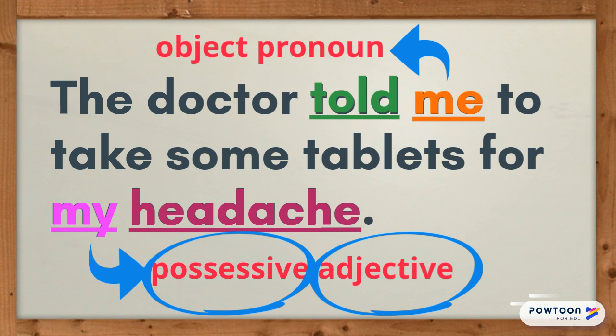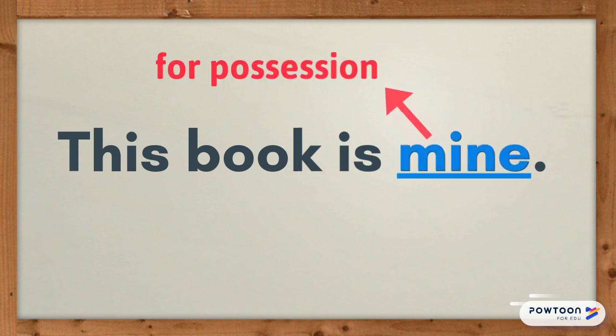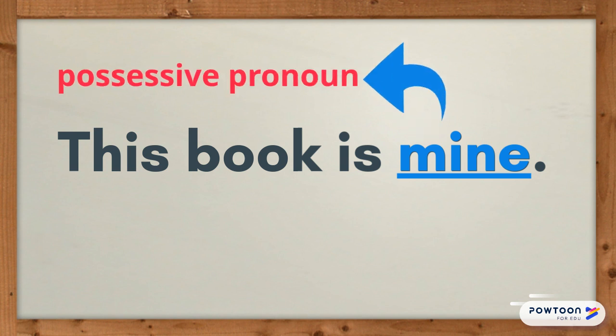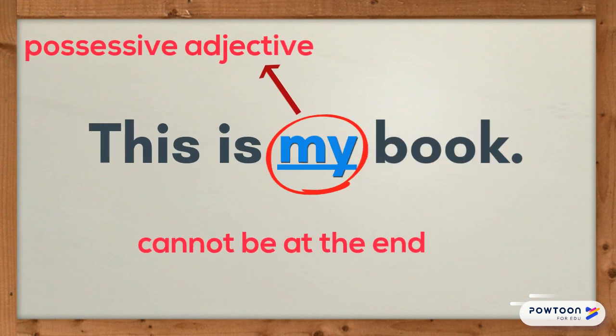Look at the next example: 'This book is mine.' Here I've used the word 'mine' to show possession — to show that this book belongs to me and no one else. The word 'mine' in this case is a possessive pronoun. Possessive pronouns usually come at the end of a sentence, whereas possessive adjectives cannot be the last word in a sentence — they must be followed by a noun.